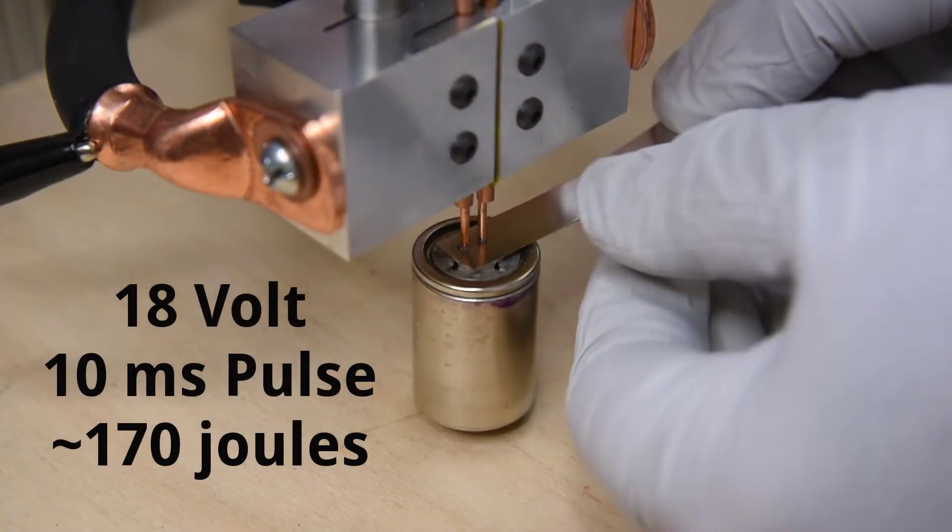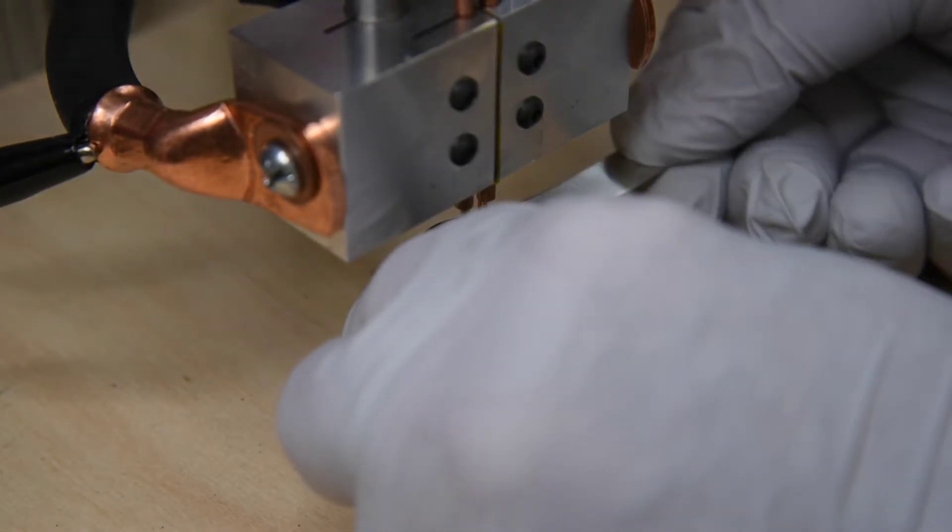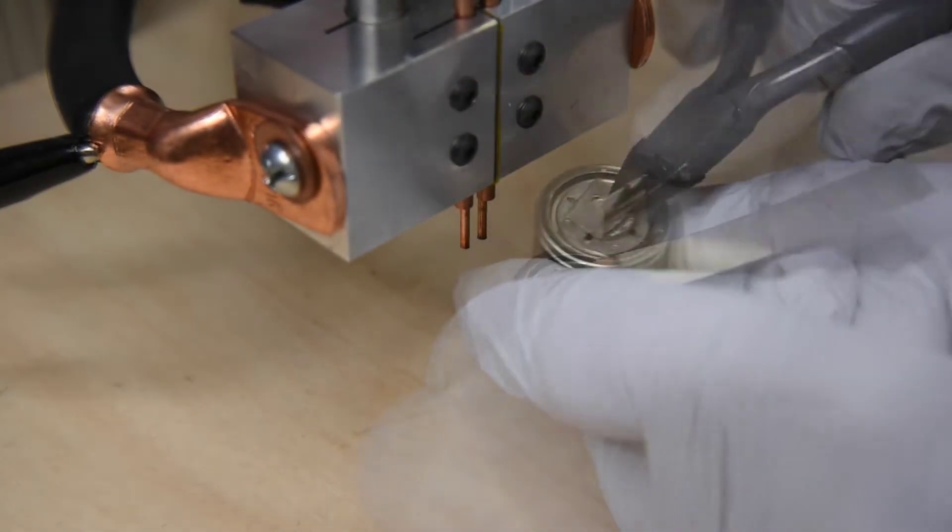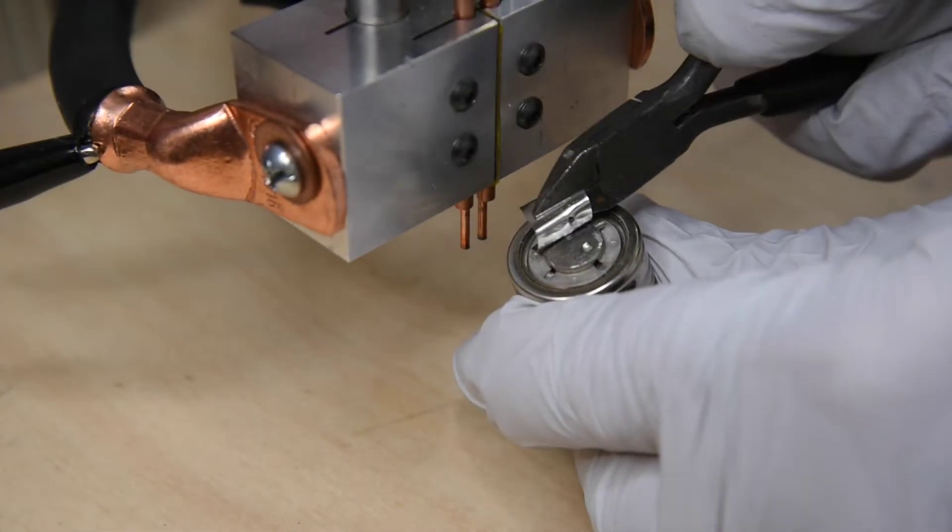At 170 joules I get a good weld. Quite a bit of tip stick which is a problem, but a good strong weld with two very good nuggets.